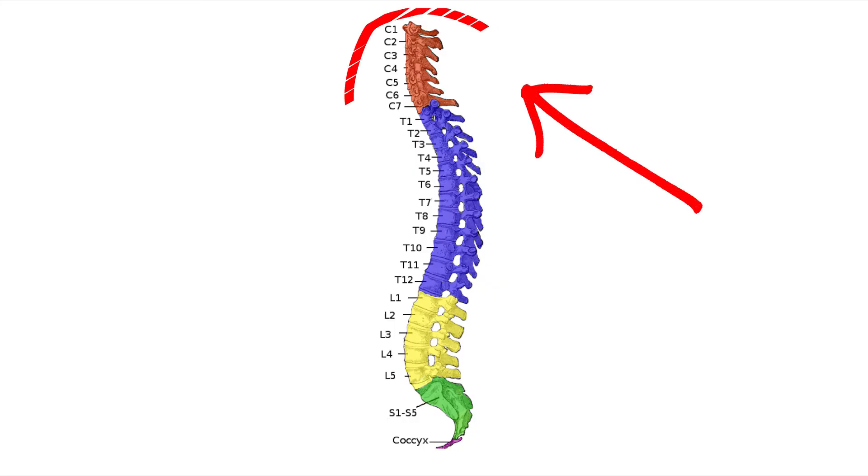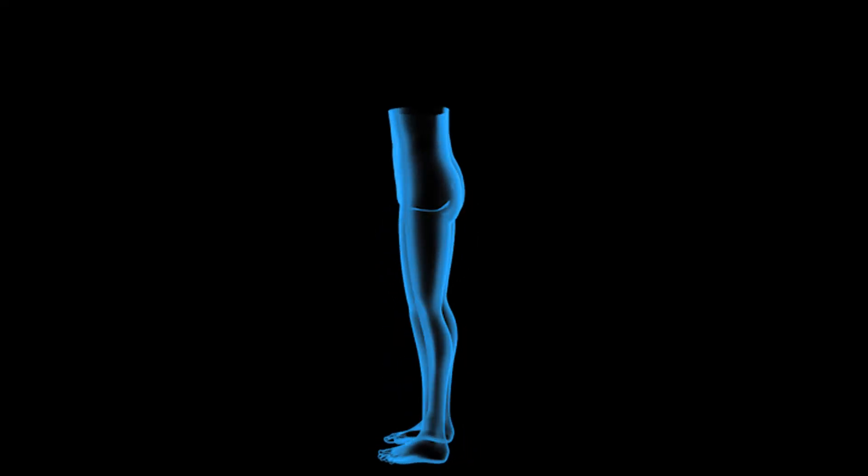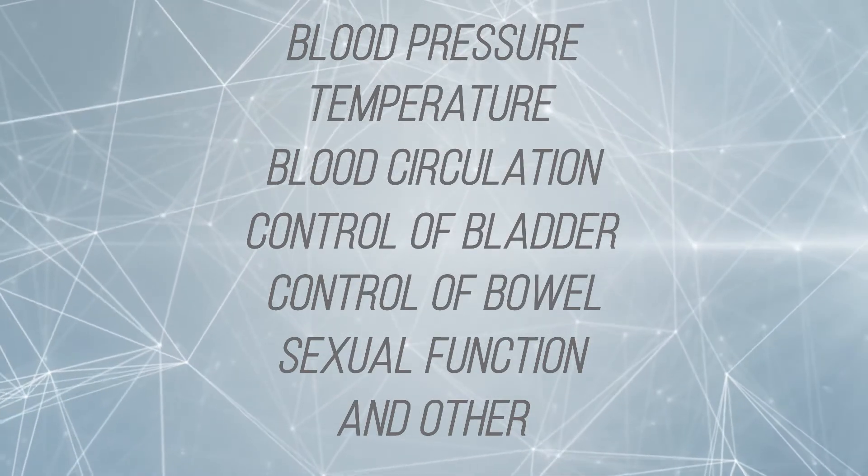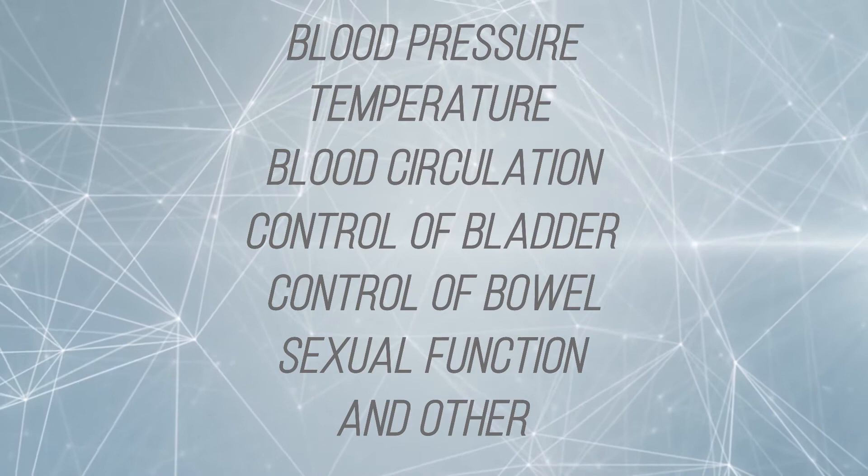The last section is cervical, which is C1 to C8. If you damage this area it can affect from your feet up to your hands, fingers, shoulders, diaphragm, breathing muscles, and your neck muscles. You should also take note that a spinal cord injury can affect blood pressure, temperature, blood circulation, and control of bladder, bowel, and sexual function.